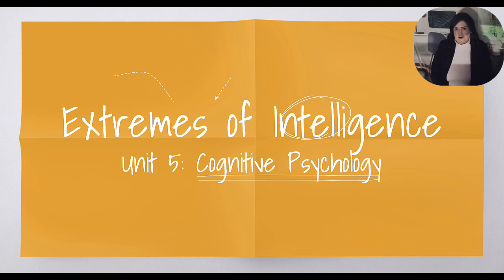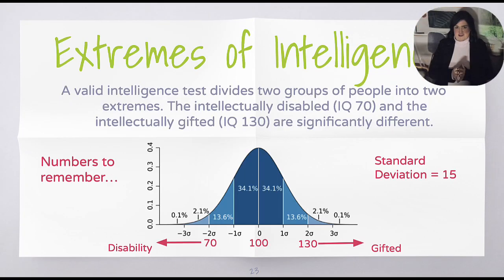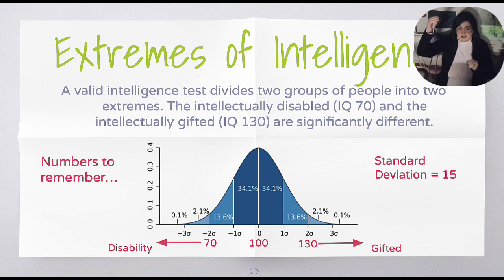We're in our final set of notes for Unit 5. It's a pretty quick one, and we're going to be talking about the extremes of intelligence and influences on intelligence. Extremes of intelligence being either end of the normal curve — a valid intelligence test divides people into two extremes, meaning either extremely high or extremely low. First up are the intellectually disabled.